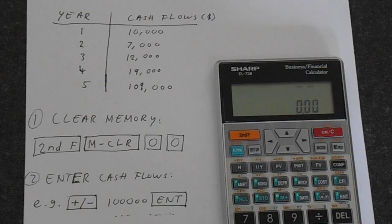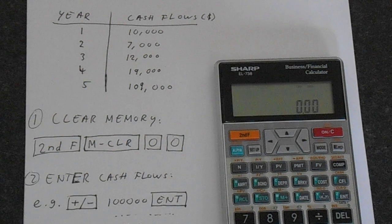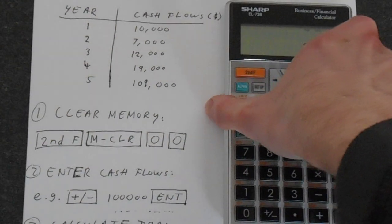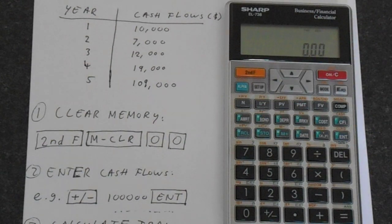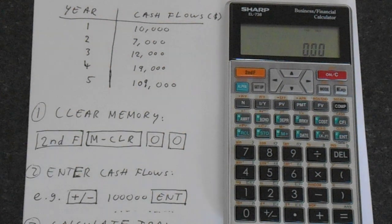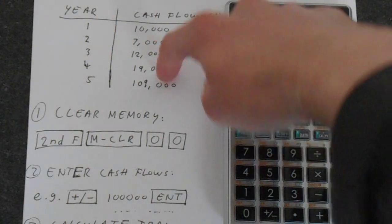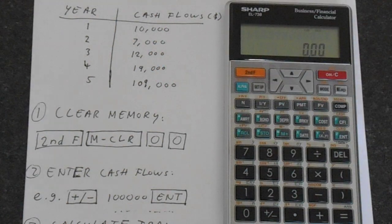The next step is to enter the cash flows into the calculator. Using the cash flow convention, negatives are for investments — money going away from you — and positives are for money coming to you. So the incoming cash flows will be positive and the hundred thousand dollar investment will be negative.